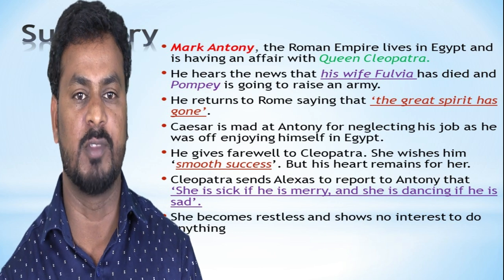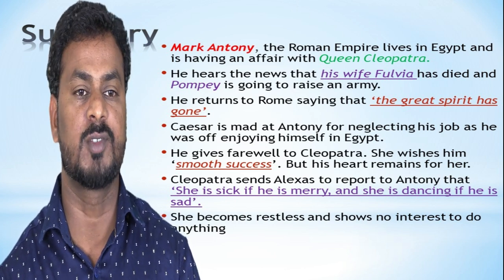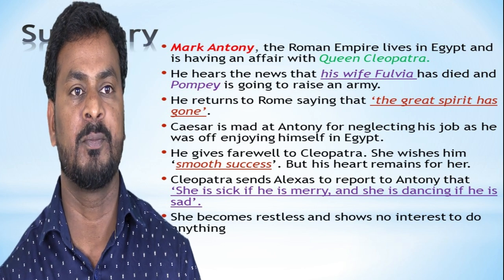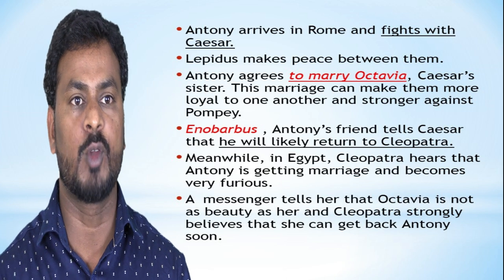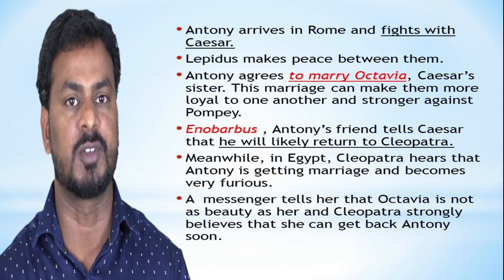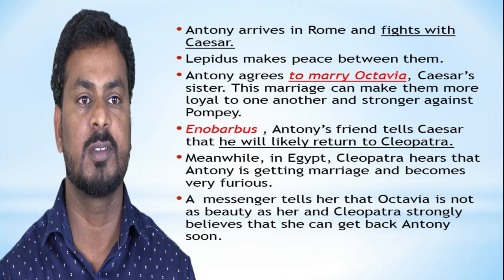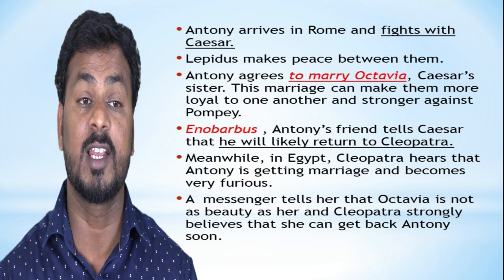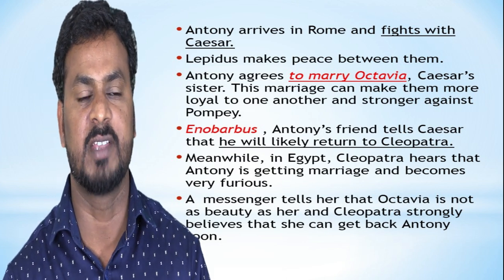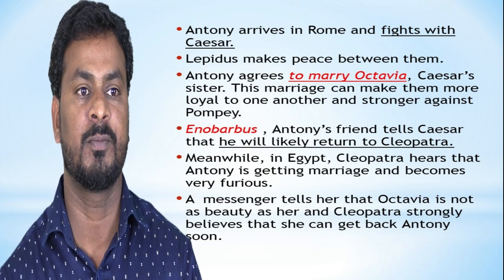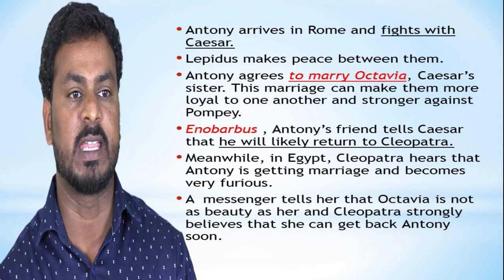Cleopatra sends a messenger to report to Antony that she is sick if he is merry, and that she is dazzled if he is sad. She becomes restless and shows no interest in doing anything. Antony arrives in Rome and meets with Caesar. Lepidus makes peace between them. Antony agrees to marry Octavia, who is Caesar's sister. This marriage is meant to make them more loyal to one another and stronger against their enemies. Cleopatra hears that Antony is getting married and becomes very furious. A messenger tells her that Octavia is not as beautiful as her, and Cleopatra believes that she can get Antony back soon.